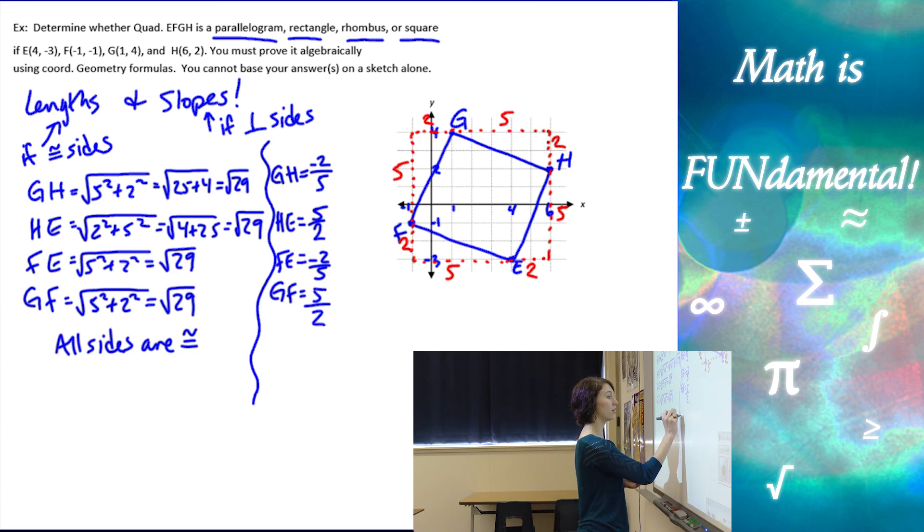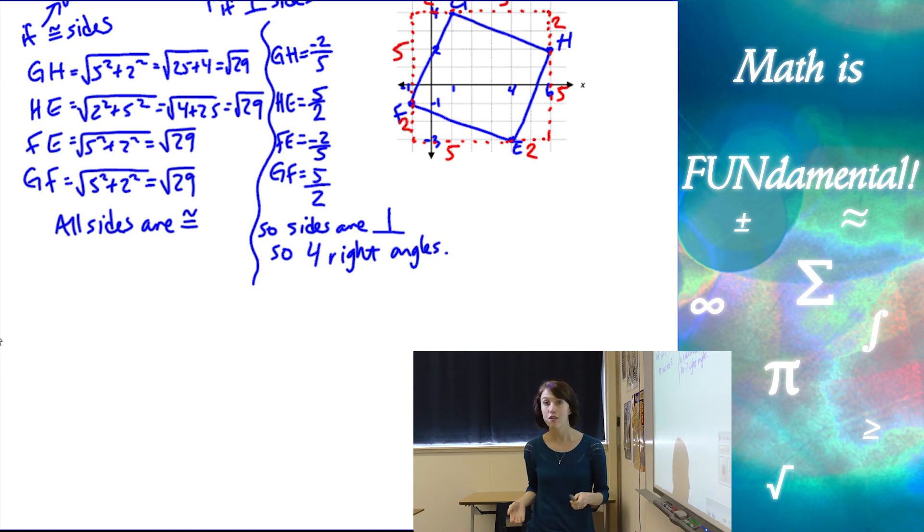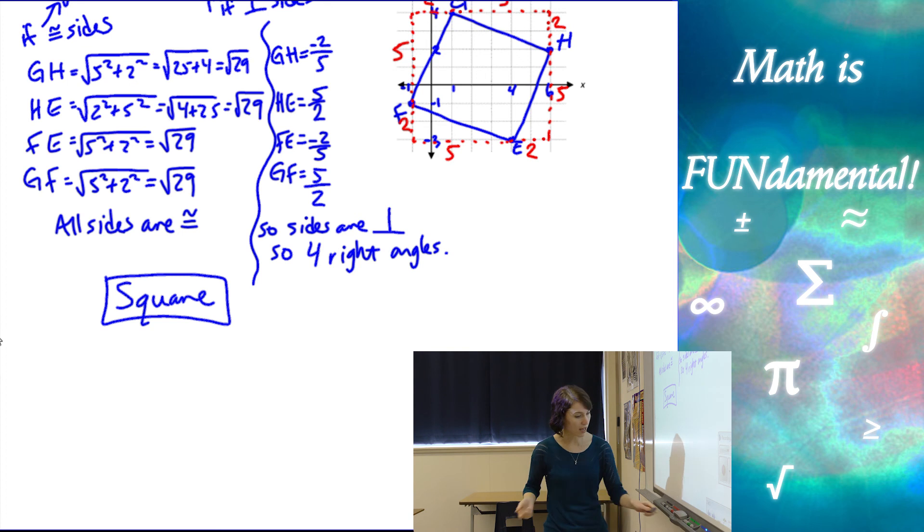All right, so if you look, so angles or sides are perpendicular, so 90 degree angles, or we should actually say four right angles to be exact, because we have all the sides are perpendicular to the ones next to them, four right angles. And we know that if all four sides are congruent and all four right angles, we have a square. So we have figured out what type of quadrilateral we have.